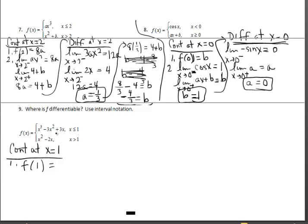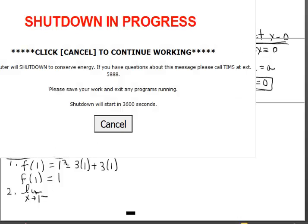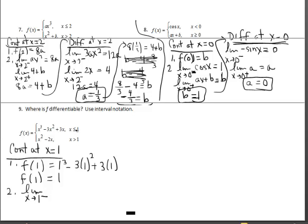The functional value at one, it belongs to the top piece, so one cubed, et cetera, one minus three plus three is one. So we have a functional value, it's one. As I approach one from the left, I'm on that top piece as well. So I know what the limit is, based on my previous work up here, if I plugged one in, I'm going to get one.